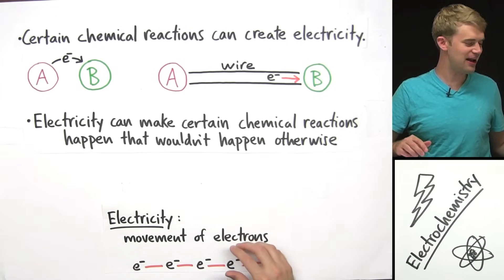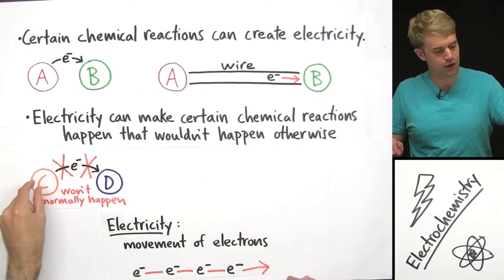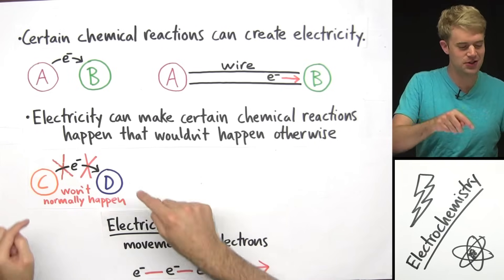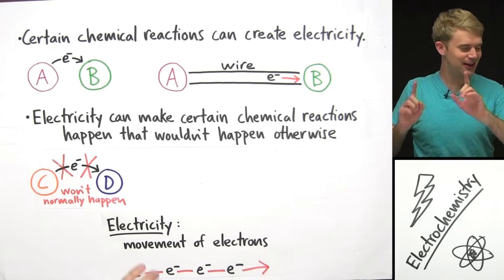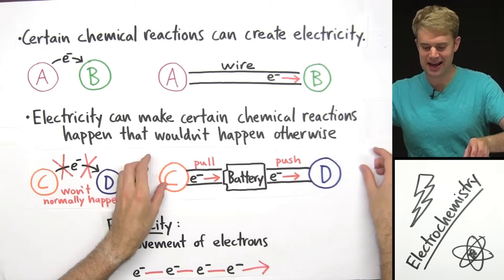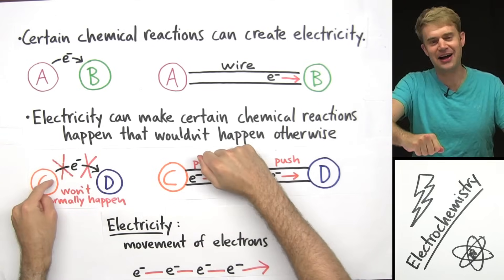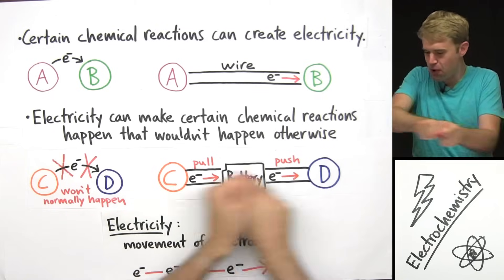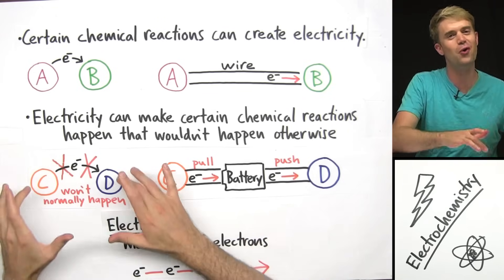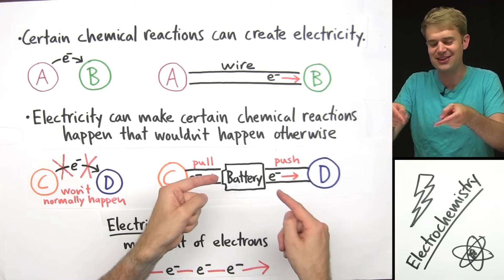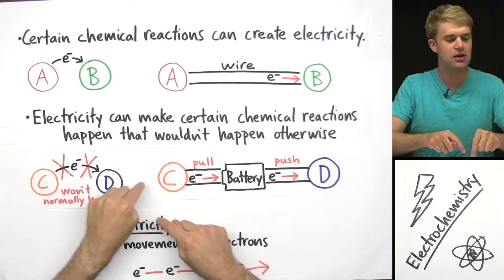Now let's look at this example. Let's imagine we have another oxidation-reduction reaction: electrons transferring from C to D. But imagine this doesn't normally happen because C doesn't want to give up electrons and D doesn't want to gain them. Here's where we can use electricity. We can take the electrical energy from a battery and use that to pull the electrons from C and to push them to D. So even if the movement of electrons doesn't normally happen, we can use the electrical energy of a battery to pull and push the electrons to make this reaction happen.